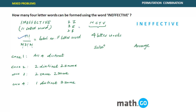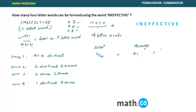There are seven distinct letters: I, E, F, N, C, T, and V. Out of these seven, you must choose four, which gives 7C4. Then you arrange those four distinct letters in 4! ways. So the answer for case one is 7C4 × 4!.